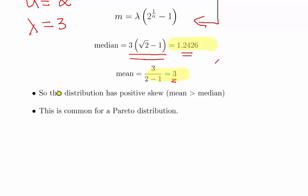It essentially has a positive skew. The mean is greater than the median. As a quick remark, you'll probably find that is common for pretty much the Pareto distribution. We'll leave it there. Nice one to get started with.